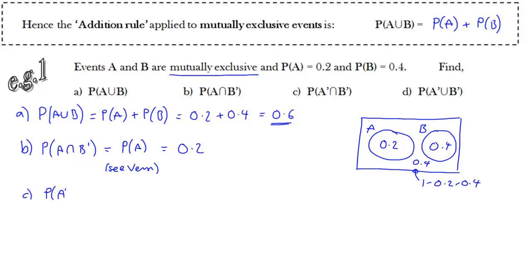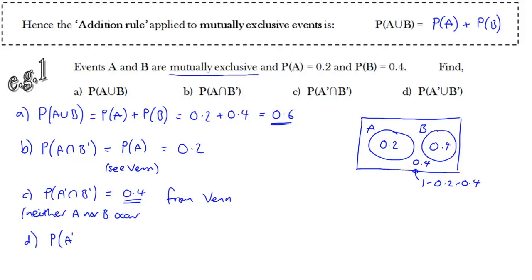Part C: the intersection of not A with not B. This is the region where A doesn't occur and B doesn't occur. From the diagram, this is just the region outside of both circles — just 0.4. We can write 'from Venn diagram' as our working. Part D: the union of not A and not B. This is the region where either A doesn't occur, or B doesn't occur, or neither of them occur. Take some time and convince yourself that this is the whole of the sample space. Consider each region separately if you're not sure.